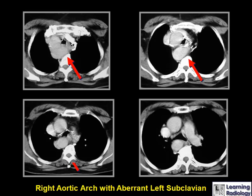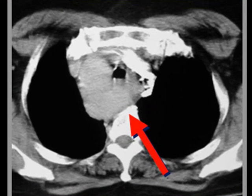This is a CT example of a right aortic arch with an aberrant left subclavian artery. You can see that the arch is on the right side and that there is a vessel that insinuates itself behind the trachea and the esophagus — the aberrant left subclavian artery passing toward the left side of the body.